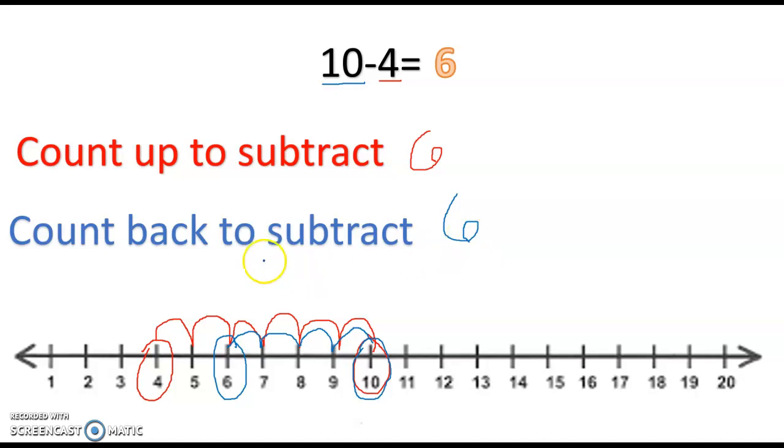So to review you can count up, start with your smaller number, make jumps all the way up to your bigger number and then count how many jumps you made. Or you can count back, start with your bigger number, take away your smaller number and the number that you land on is your answer. You can use either of these strategies. You're going to be practicing this today.